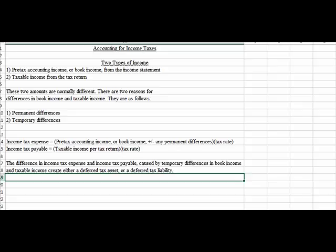Okay, so these temporary differences we were talking about, you guys, create a difference in income tax expense and income tax payable. The expense is what we're going to deduct from income on the income statement. Income tax payable is a liability we owe to the IRS. The ones that are caused by temporary differences in book income and taxable income, they create either a deferred tax asset or a deferred tax liability.